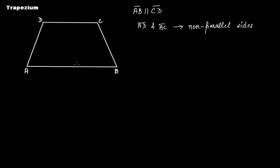So if in a quadrilateral one pair of opposite sides are parallel and another pair of opposite sides are non-parallel, that quadrilateral is a trapezium. It's a quadrilateral because it has four sides, and it's a trapezium because it has only one pair of parallel opposite sides and another pair is non-parallel.